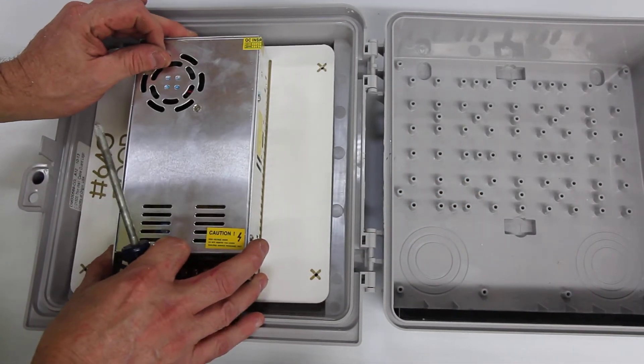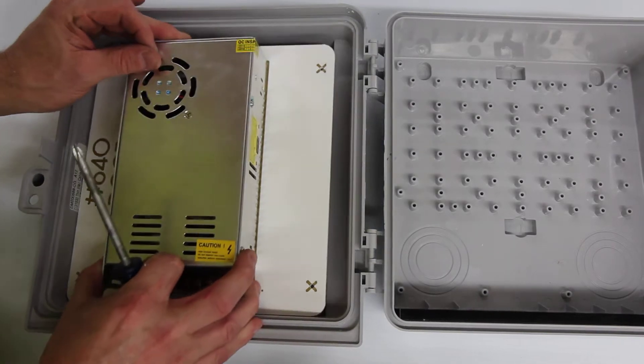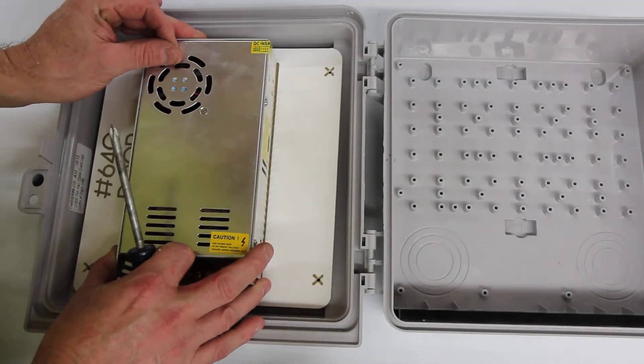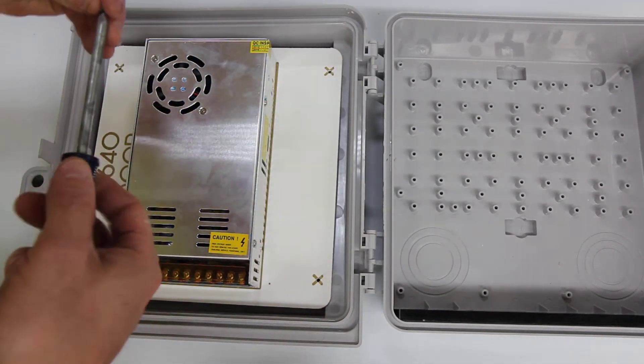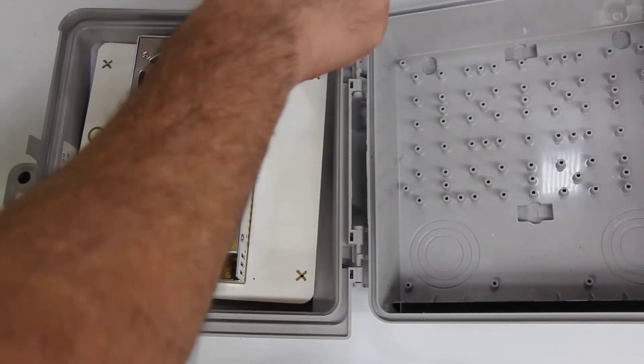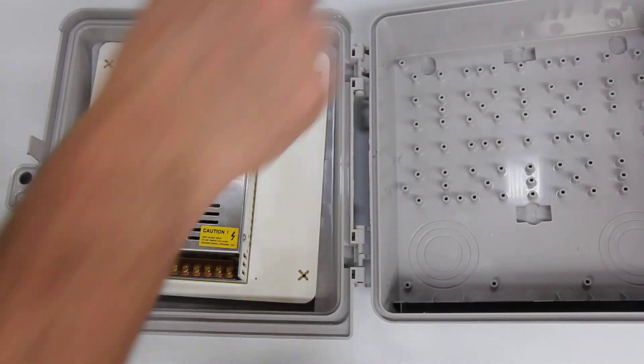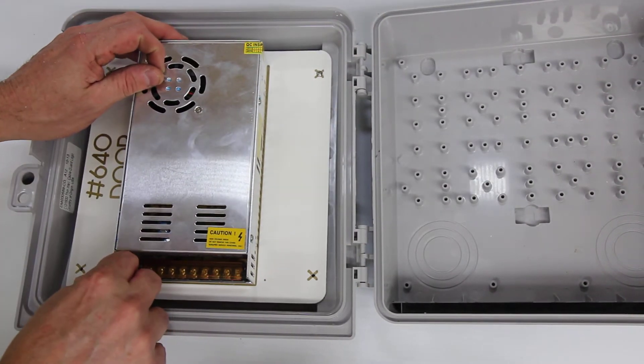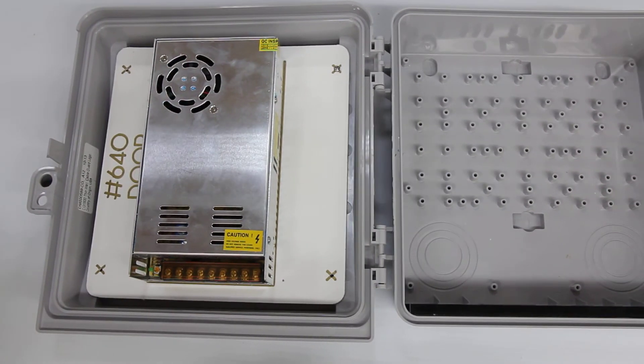Again, locating the hole. You just need to find one of the holes and put a screw in here. And then the others will automatically line up.